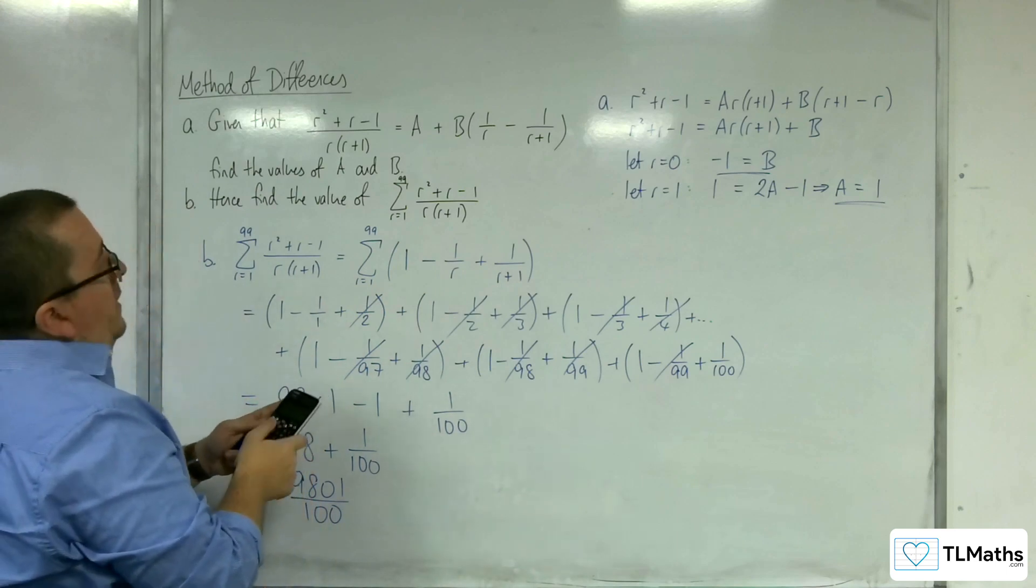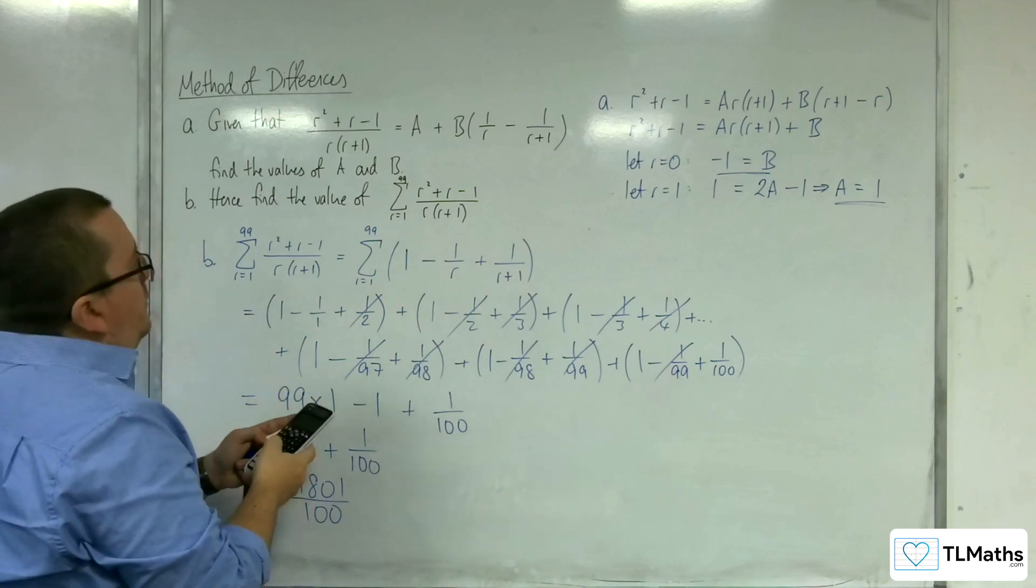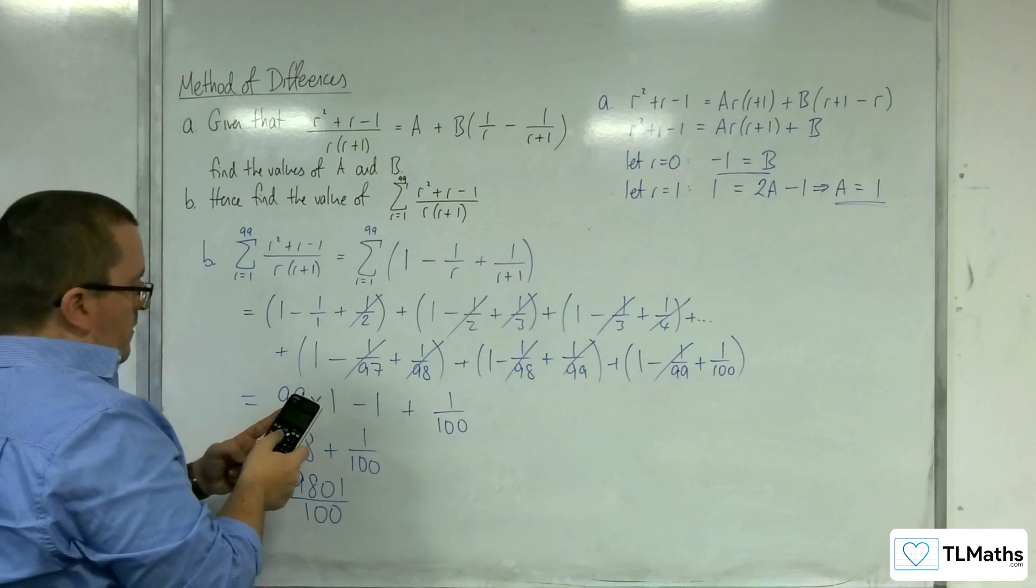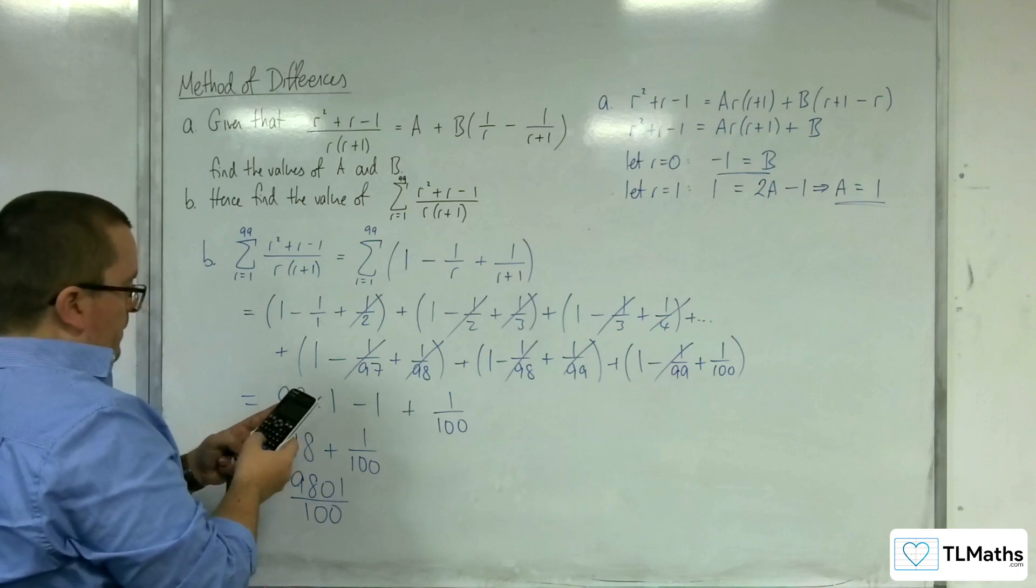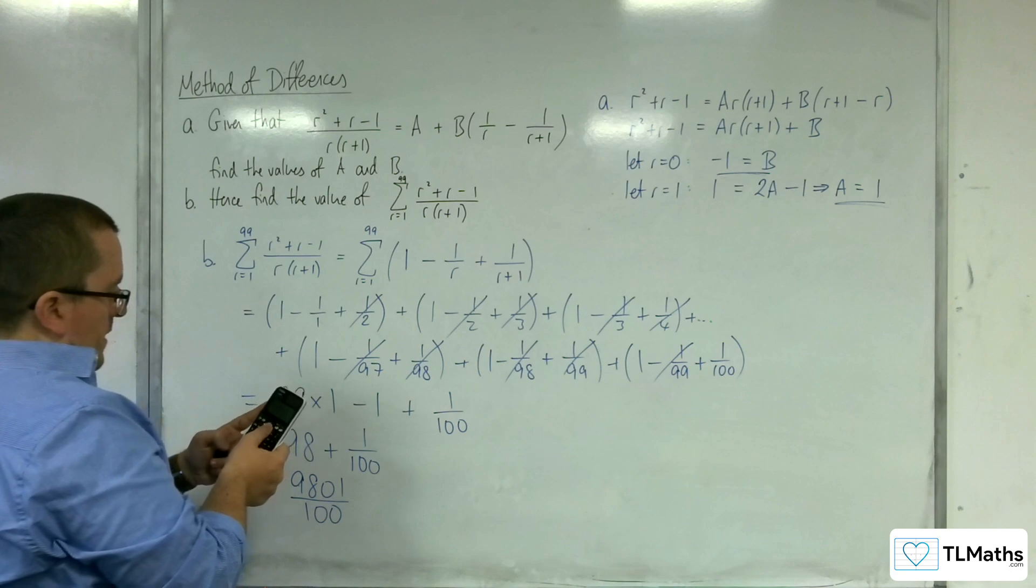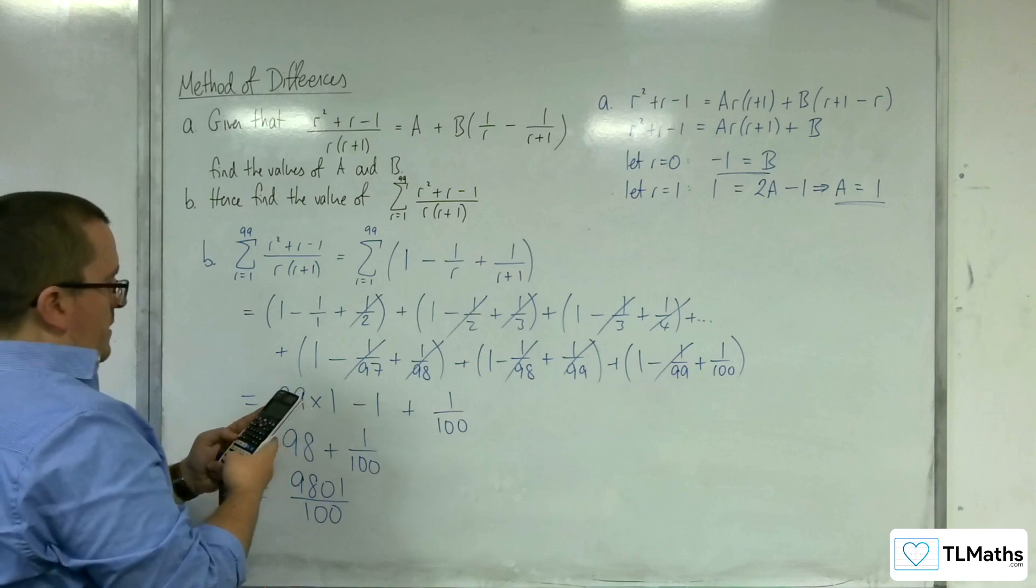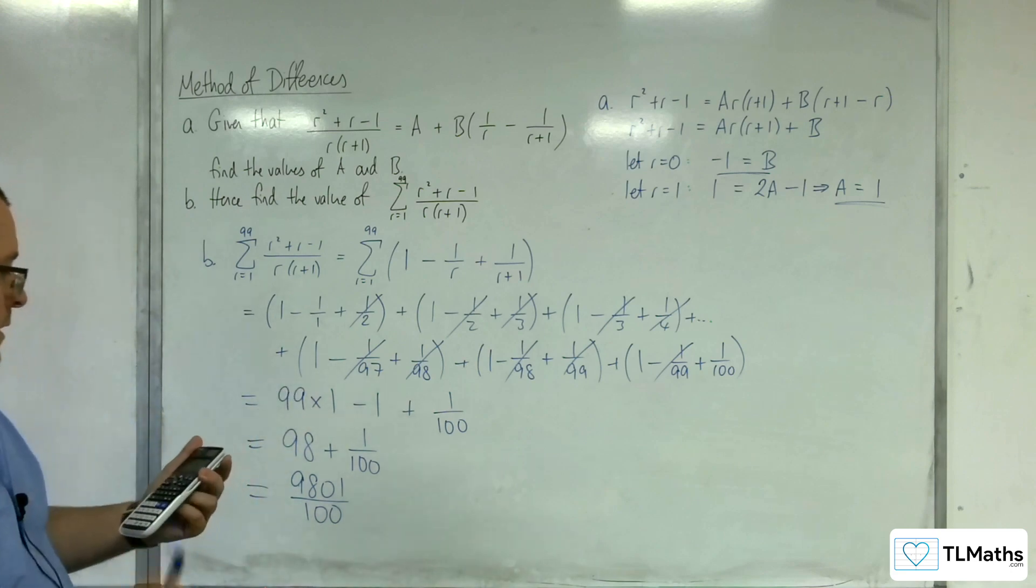So we've got, I've got to use x. So x squared plus x take away 1 over x(x plus 1). And I'm going from x is 1 up to 99.